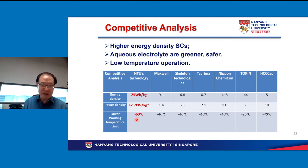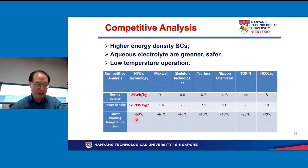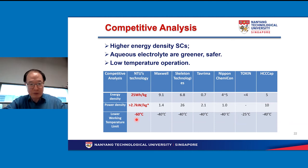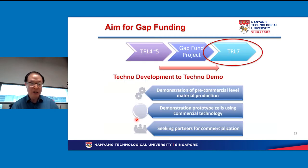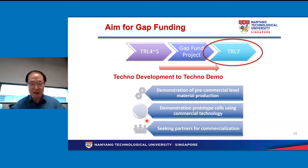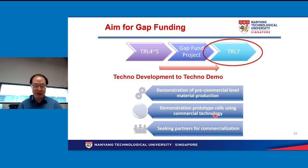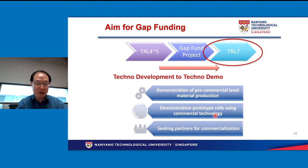Operating at minus 60°C is very important. Elon Musk's Starlink program puts up many mini satellites, and for those operations the energy storage devices need to work at low temperatures. To wrap up: we have demonstrated pre-commercial level material production, demonstrated prototype cells, and we have just started a company and are in the process of talking to potential investors.